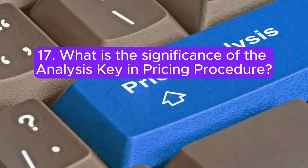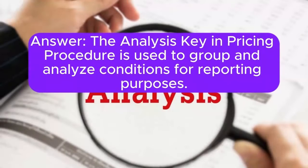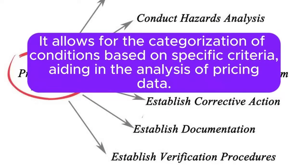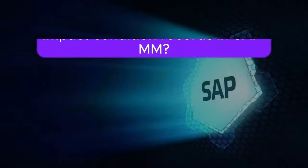Question 17: What is the significance of the analysis key in pricing procedure? Answer: The analysis key in pricing procedure is used to group and analyze conditions for reporting purposes. It allows for the categorization of conditions based on specific criteria, aiding in the analysis of pricing data.